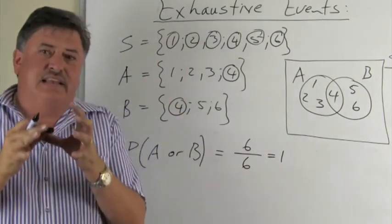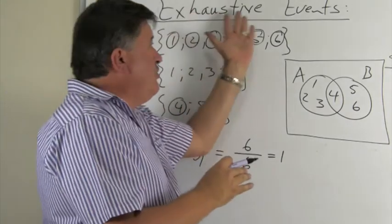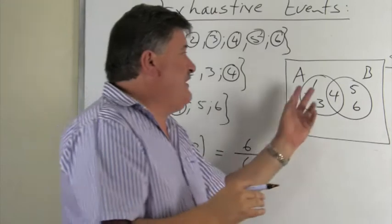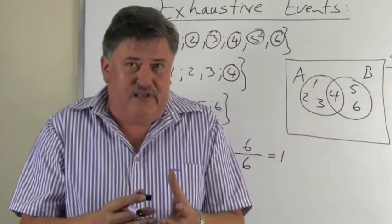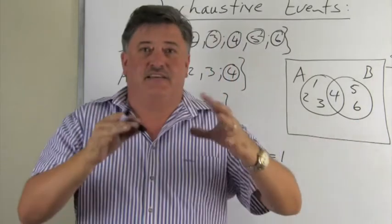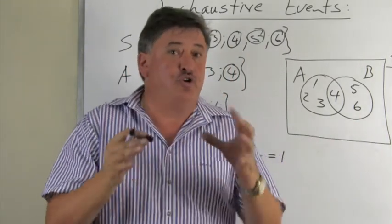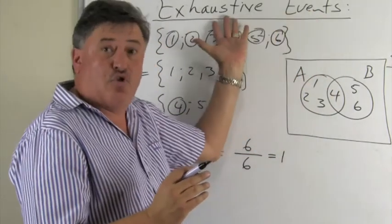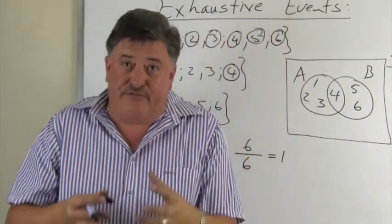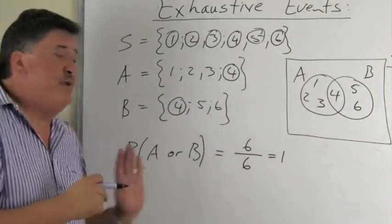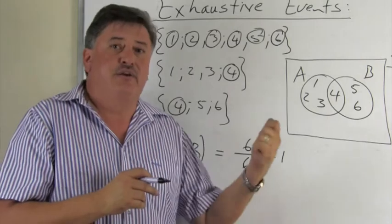So what is significant about exhaustive events are the following: if two events are exhaustive, it means there are no outcomes outside the two events. They are all used by the two events. The two events are then therefore exhaustive. And what is very important to remember is that the probability of A or B is equal to 1.